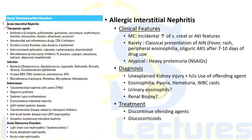AIN due to therapeutic agents is also termed allergic interstitial nephritis. Causes include antibiotics such as beta-lactams, quinolones, vancomycin, sulfonamides, and erythromycin; NSAIDs and COX-2 inhibitors; diuretics including loop diuretics, triamterene, and thiazides; anticonvulsants; and miscellaneous drugs like proton pump inhibitors, H2 blockers, and captopril. Basically, allergic interstitial nephritis is the term for AIN occurring due to therapeutic agents.